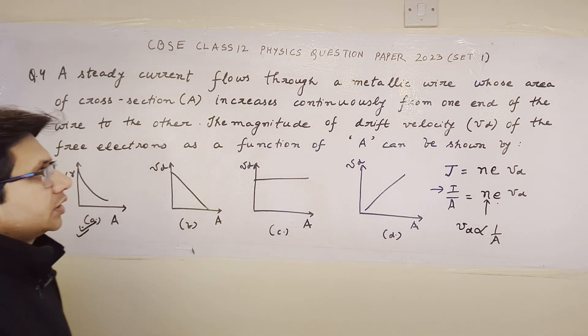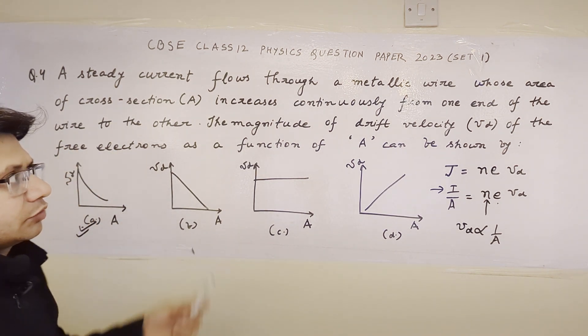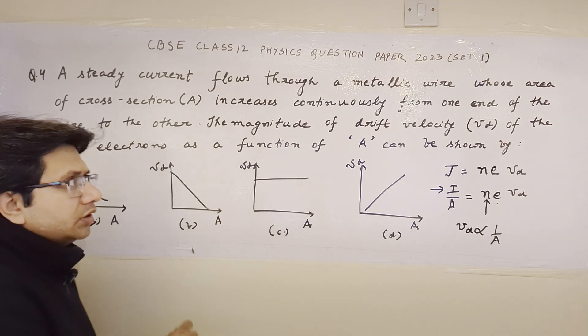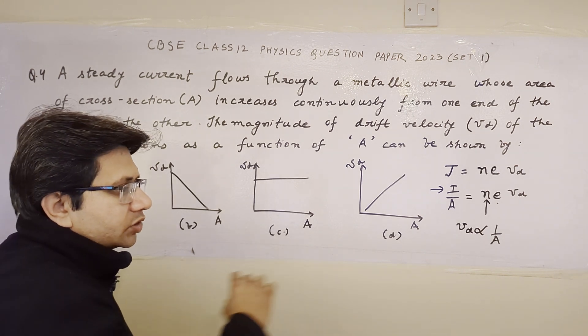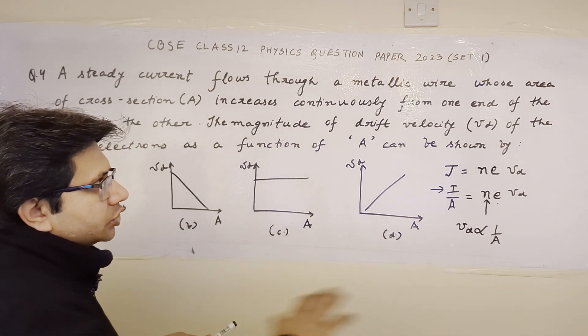The problem states that a particular metallic wire makes steady current flow. The area of cross-section is increased from one end to the other end continuously. The wire's cross-section is not uniform.